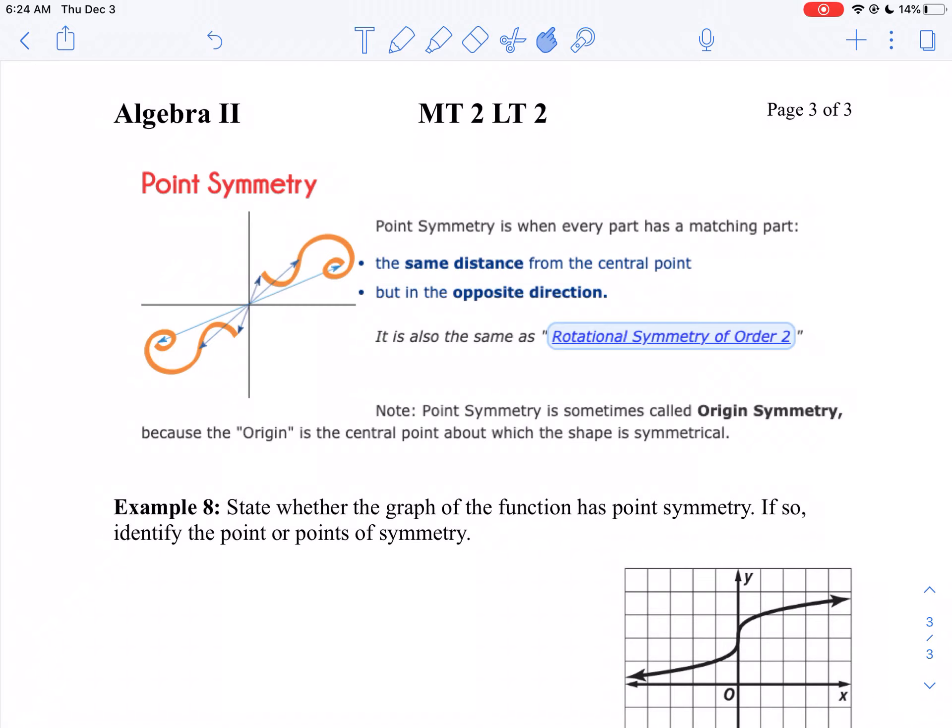The other type of symmetry we have is point symmetry. Point symmetry is when you rotate it. That's what I want you to think. Line symmetry is reflection. This is a rotation of 180 degrees.